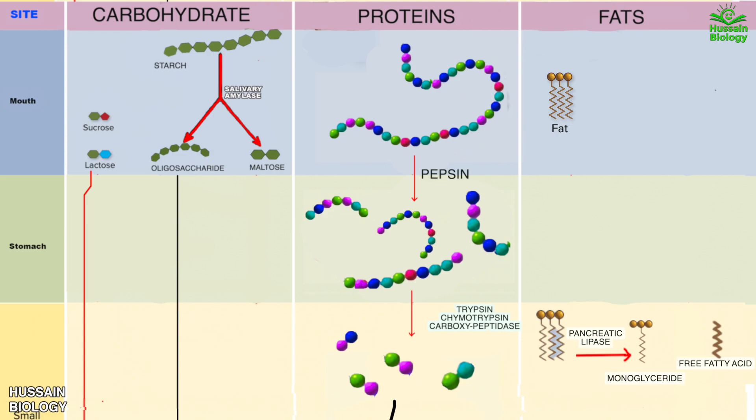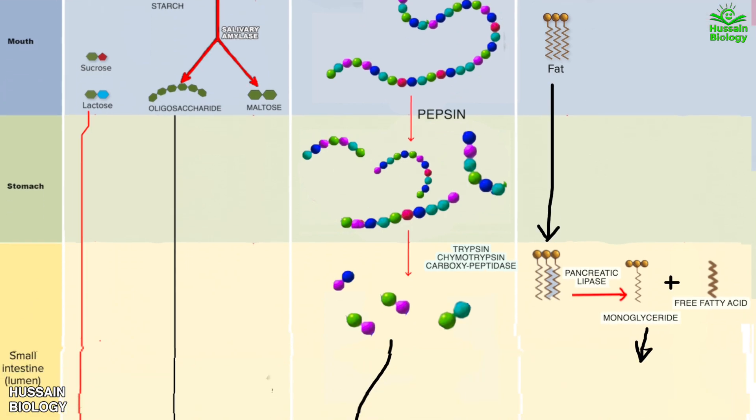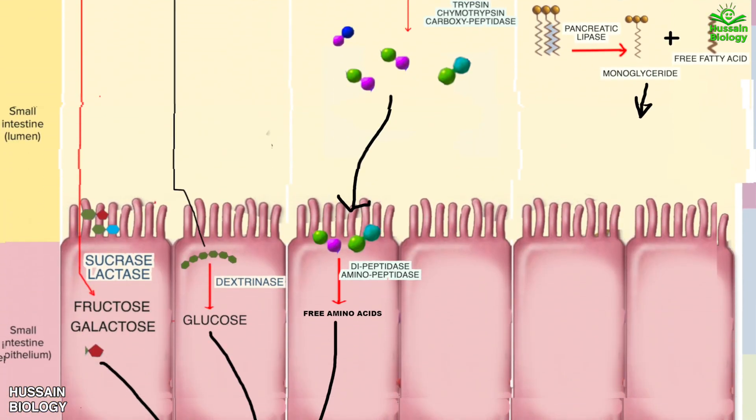Now we see this fat can also be acted upon by lingual lipase and gastric lipase in the stomach where these are converted into free fatty acids. Then we see these monoglycerides or free fatty acids combined together in presence of bile salts and we get the formation of micelles.